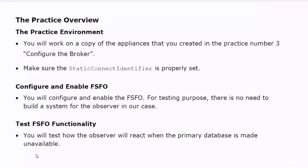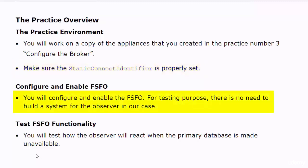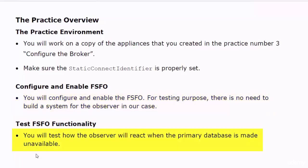At a high level, in this practice you will first prepare the appliances. You will work on a copy of the appliances that you created in Practice number 3. Then you will configure the broker, examine the value of the Static Connect Identifier property and fix it if needed, and then implement the procedure to configure and enable the FSFO.